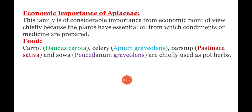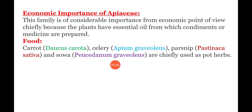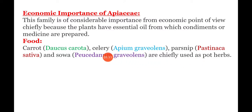The first category is food. Daucus carota, that means carrot, next celery, parsnip, and soa are chiefly used as pot herbs. They are used as food.